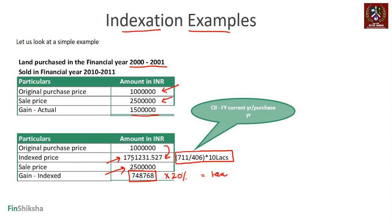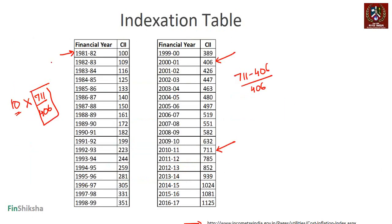So the indexed cost becomes 17 lakh 51 thousand (approximately), based on that CII calculation. This table must be used whenever capital gains tax is being calculated — especially for land, where holdings are often five, seven, or ten years, leading to a significant tax saving because of indexation.